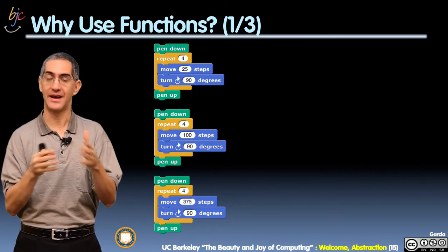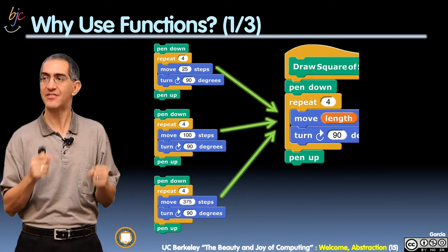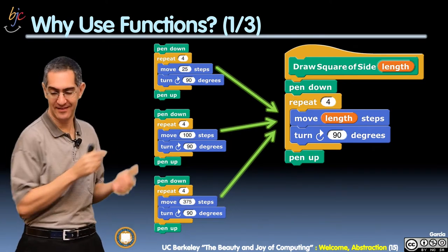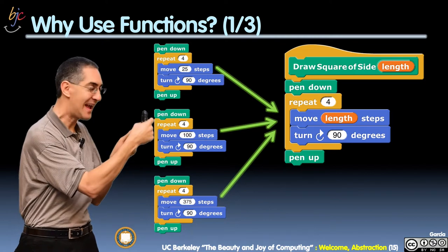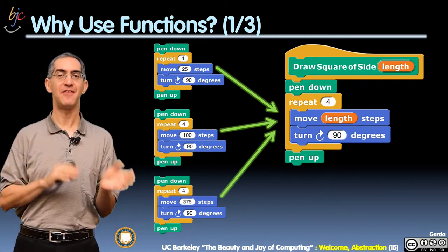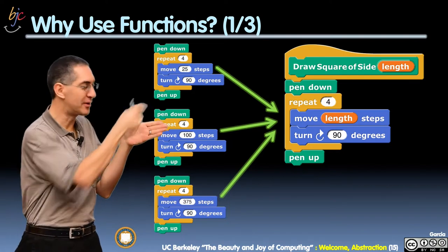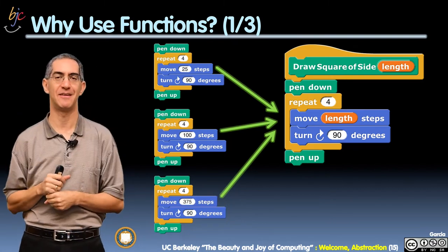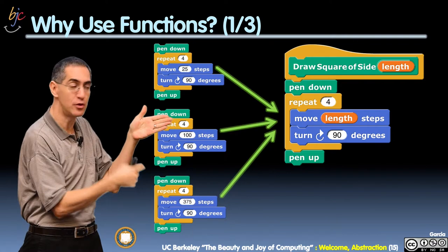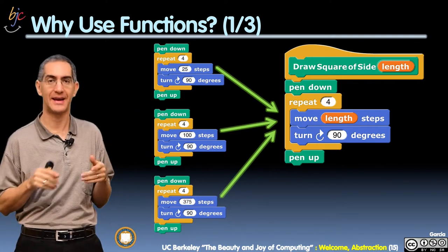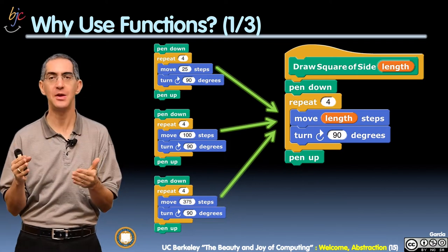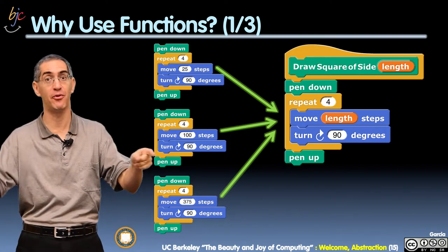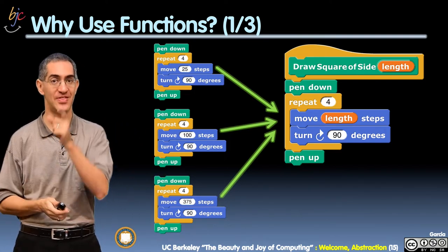So the goal is, can we do that? And the answer is yes. That should really be one piece of code, a block that says draw a square of side length, where that length is an input. Just like the 500 Hats of Bartholomew Cubbins, you can grab that input and keep dragging it into other parameters of your code. You drag that length into the one piece that was changing across the draw square block, and now you move length steps. You have a beautiful piece of code that works seamlessly for any square size — not just the three you had before, but any square size. You've generalized it in a beautiful way. That's why you use functions.